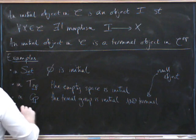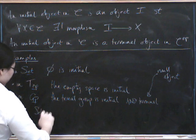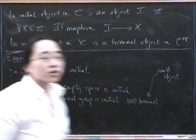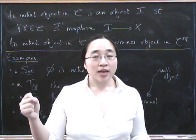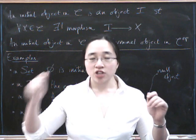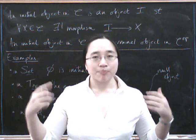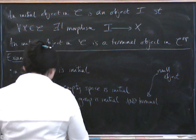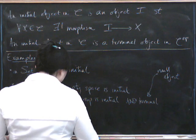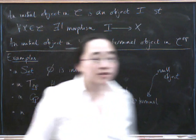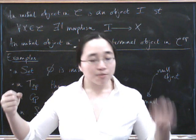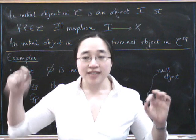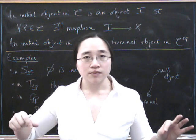For example, if you think about the category of pointed sets, a pointed set is a set with a chosen element, the point, and the morphisms between them have to take the chosen element to the chosen element, so they're sort of base point preserving. And also, you can think about based spaces, which are likewise. A base space is a topological space with a chosen point called the base point, and the maps between them are then continuous maps that take the base point to the base point, right?